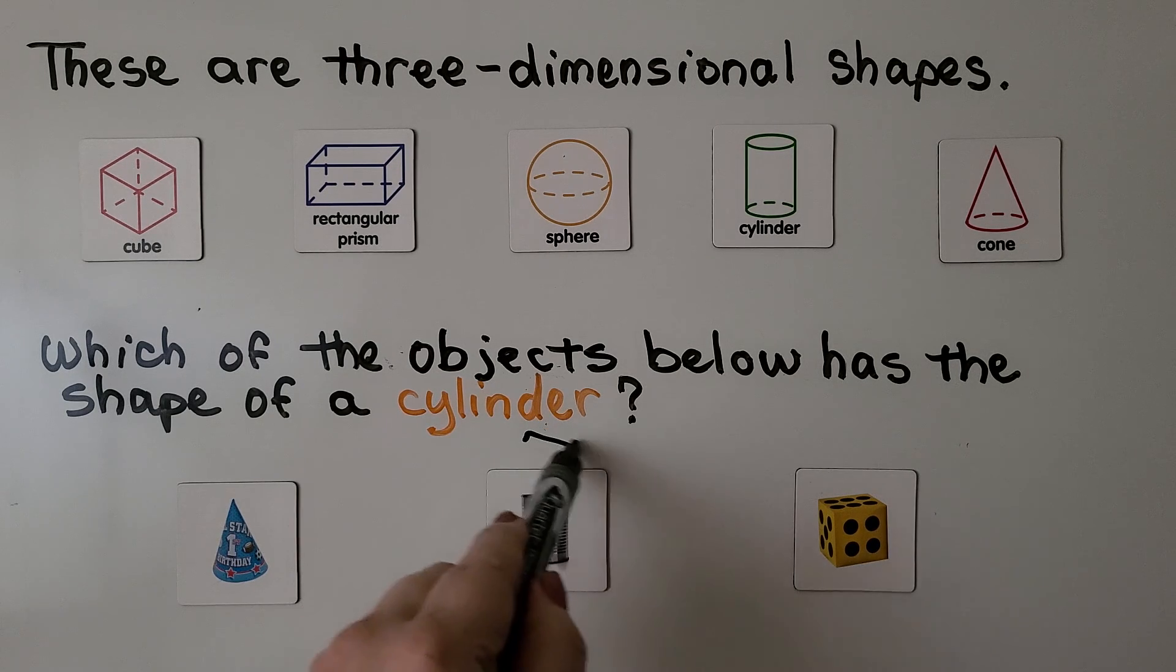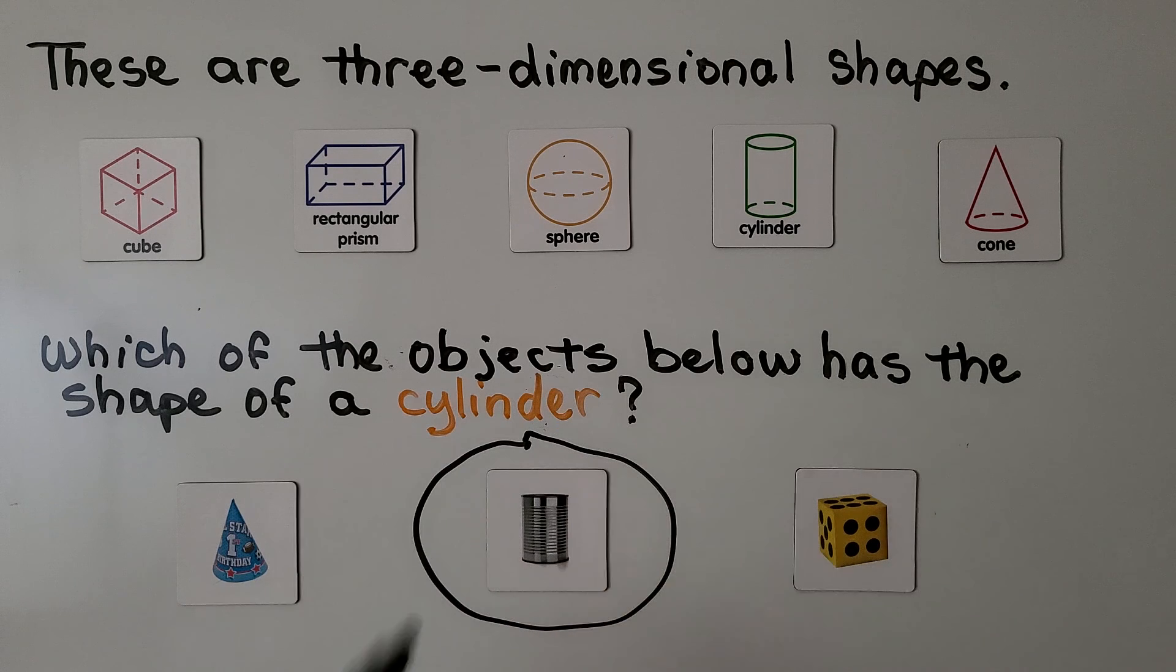If you said the can, you're right. That's the shape of a cylinder. This is the shape of a cone, and this is the shape of a cube.